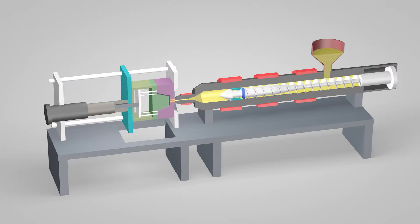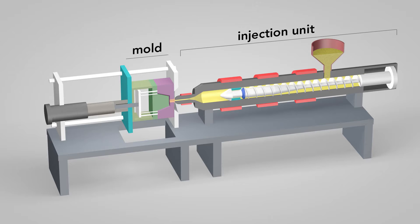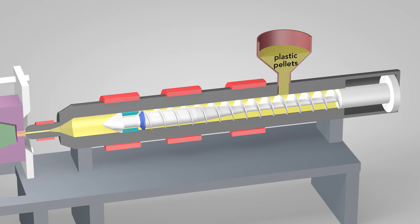An injection molding machine has three main parts: the injection unit, the mold, and the clamp. Plastic pellets in the hopper feed into the barrel of the injection unit. Inside the barrel, a screw transports the pellets forward.